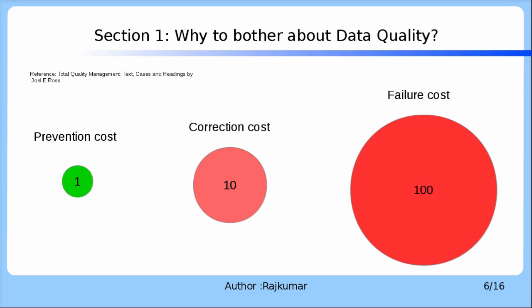As per Joel E. Ross, an expert in quality management, an amount of $1 spent on prevention of a data quality issue will save $10 on amendments or corrections to be made and $100 on failure occurrence. From all these studies and surveys, it is clear that these setbacks due to data issues could have been avoided or reduced if data quality or data governance tasks were put in place first while processing the data.